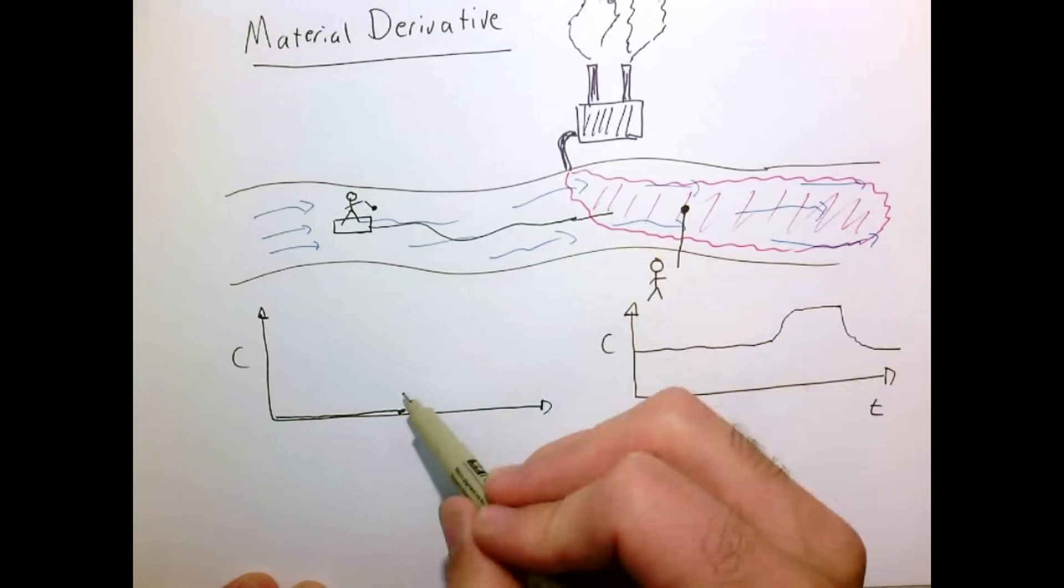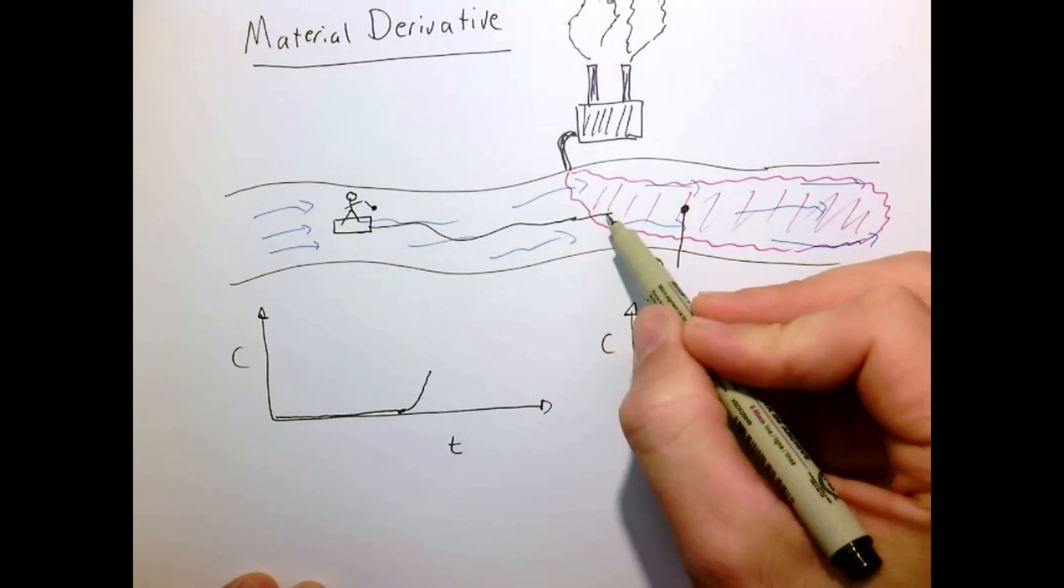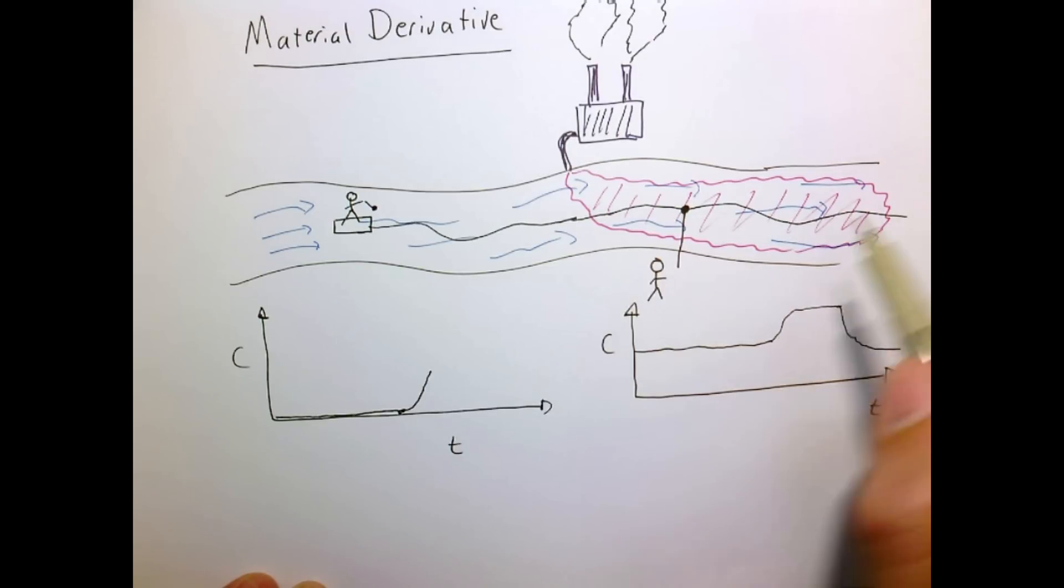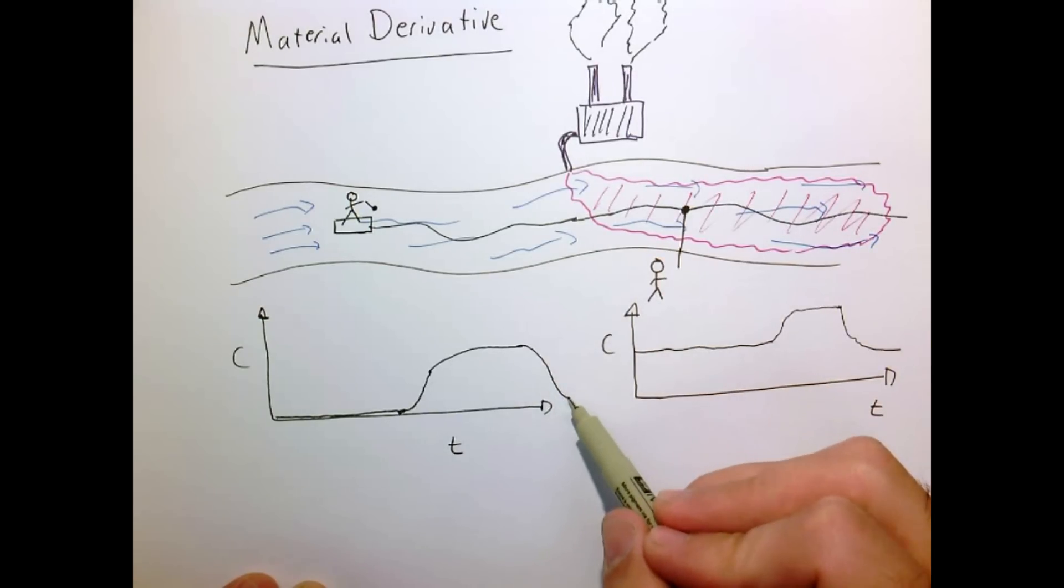You cross over in here and so it starts to increase. As you move through here you see maybe a high value and then maybe you leave the plume or something and it decreases again.